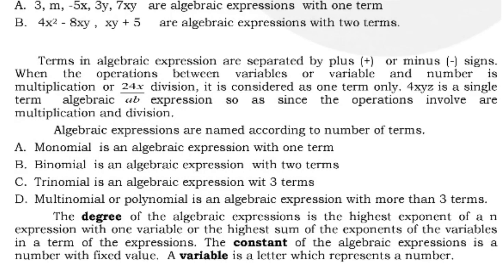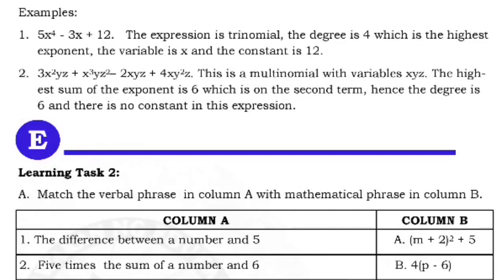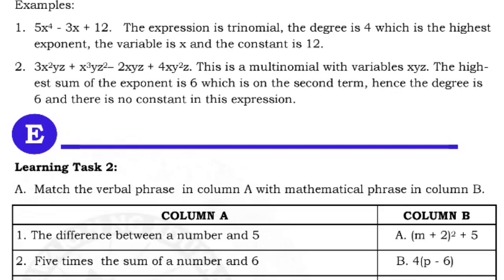The degree of an algebraic expression is the highest exponent of an expression with one variable, or the highest sum of the exponents of the variables in a term of the expression. A constant is a number with a fixed value — no variable. A variable is a letter which represents a number. Example 1: 5x⁴ − 3x + 12 is a trinomial with three terms; the degree is 4, the variable is x, and the constant is 12.